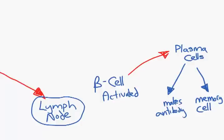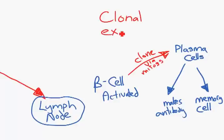This process in the lymph nodes where the B cells or B lymphocytes are activated and they clone and clone via mitosis is called clonal expansion. Because we're expanding the number of clones of the cells that can produce antibodies so that we make many of these. Clonal expansion. This is one of the words IB likes us to use.